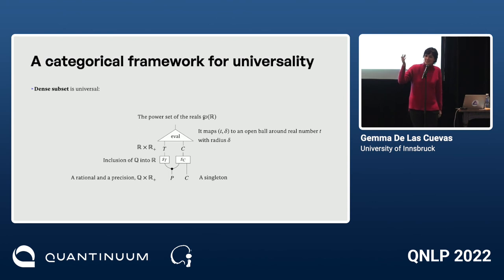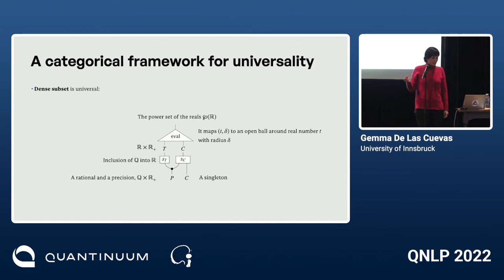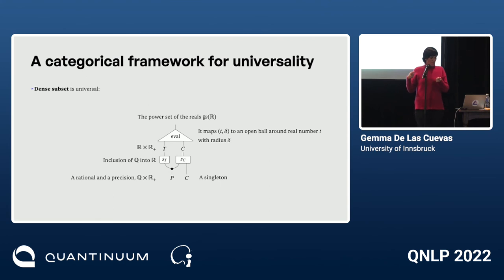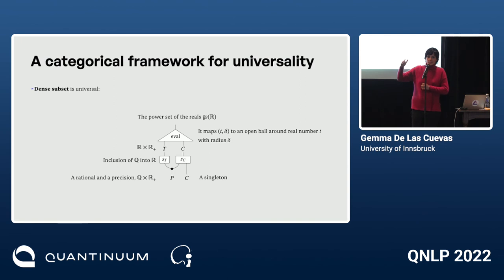Also, a dense subset is universal in this setting. For the rationals dense in the reals: the programs are a rational and a precision, the compiler is inclusion into the reals, and the statement that every real can be approximated by a rational translates to universality of the rationals in this framework.